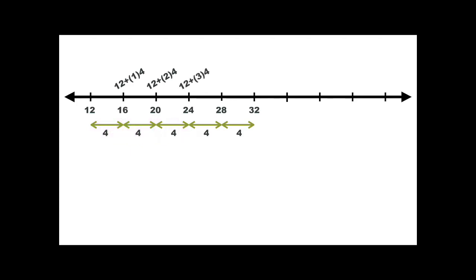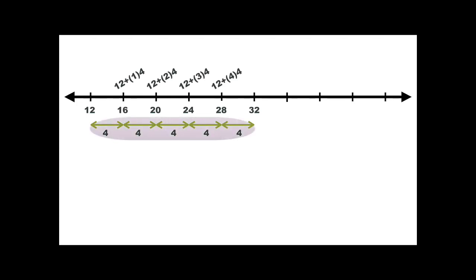The next number is obtained by adding 4 × 4 to 12. And if I want the 6th number, I have to add 5 × 4 to the first number 12.